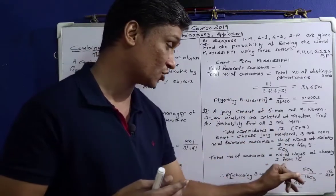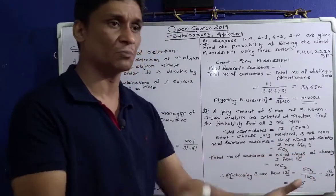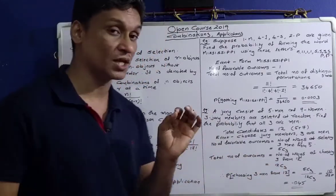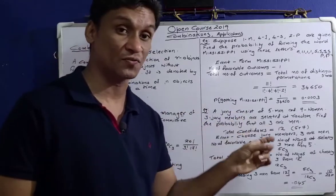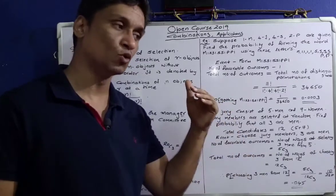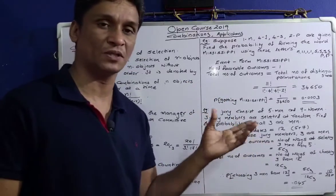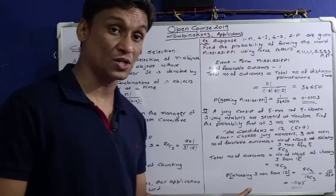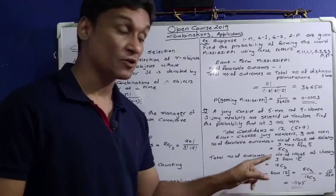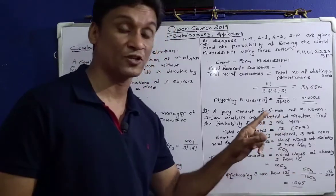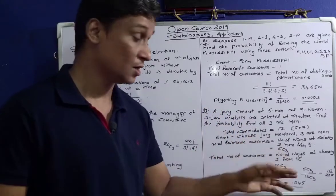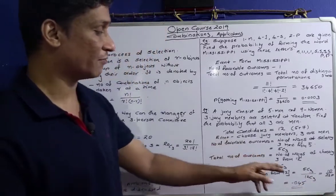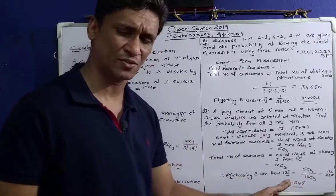12C3 is the number of ways of choosing 3 from 12. Total number of outcomes is 12C3. Number of favorable outcomes if you choose 3 men is 5C3. Total number of outcomes is 12C3.